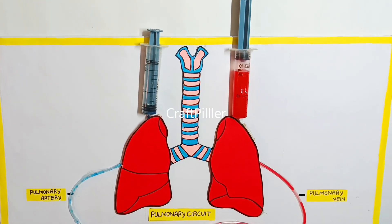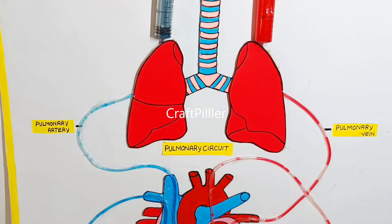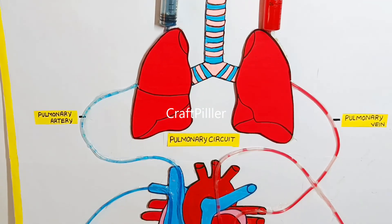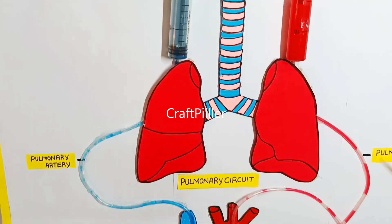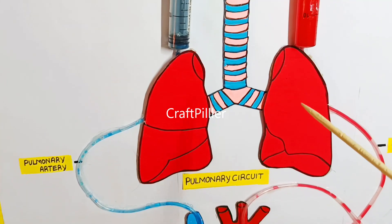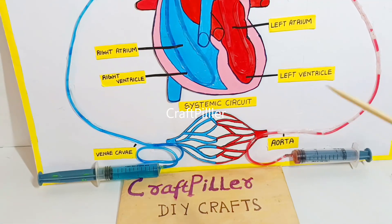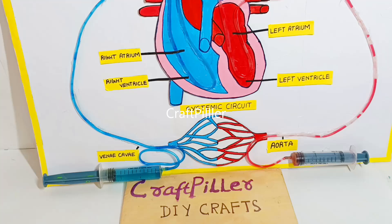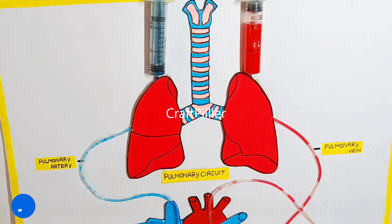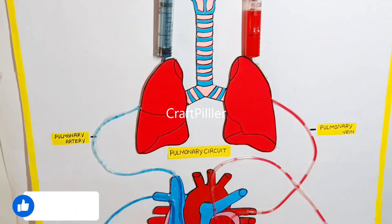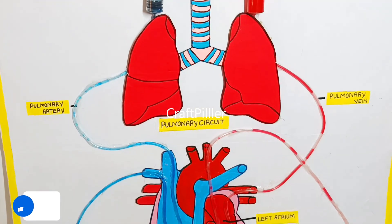Hello friends, welcome back. In this video, I am going to explain how the blood circulatory system really works — between the lungs and the heart, as well as how it distributes to the whole body.